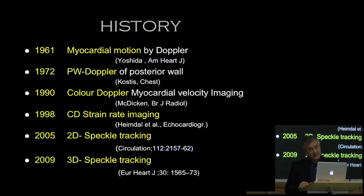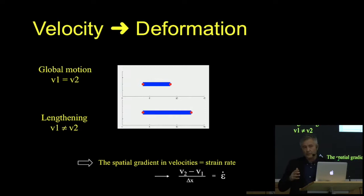Although it was promising, there came an easier technique — and that's what we refer to as speckle tracking. It enables us to study myocardial deformation as well and gets rid of the major limitation of Doppler, which is angulation. Especially for transesophageal imaging, misalignment is a major limitation of Doppler techniques. Speckle tracking overcomes that limitation.